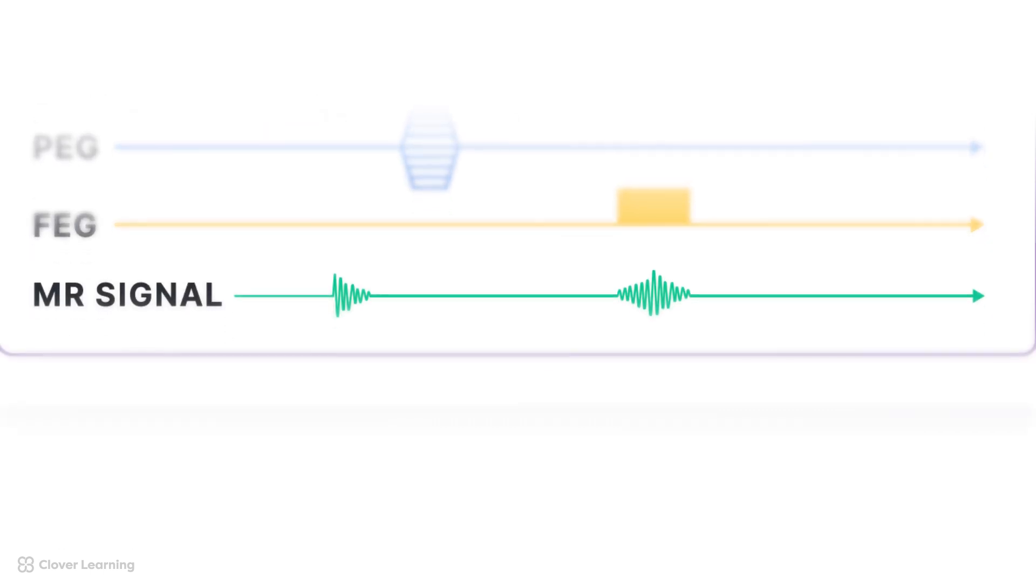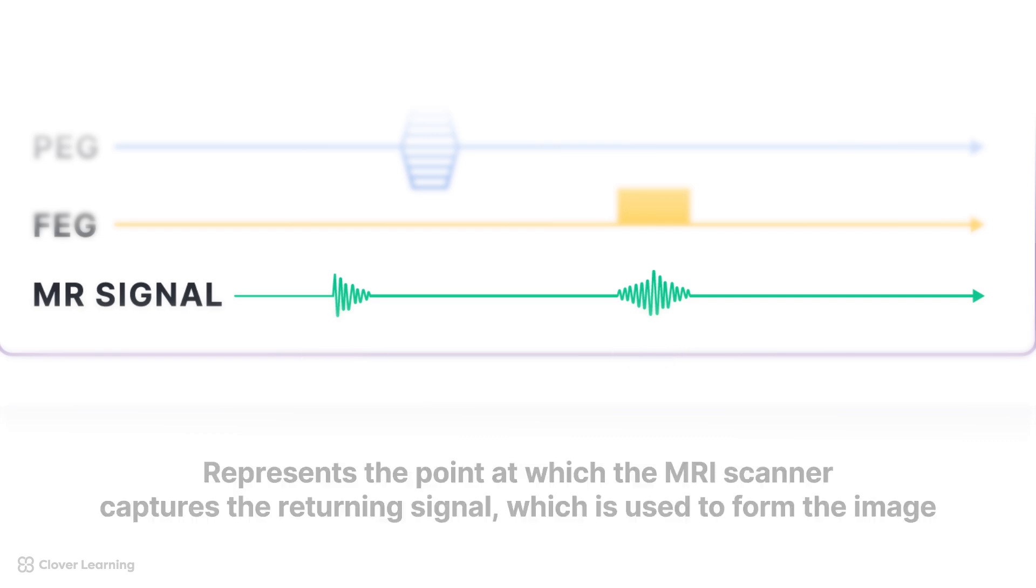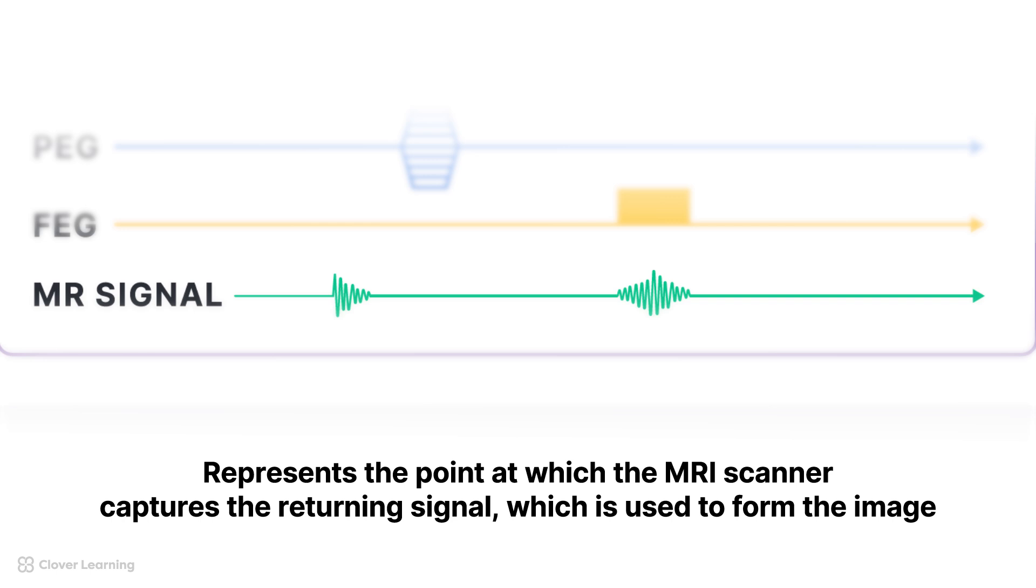The next line depicts the free induction decay, the FID, and the echo, also called the signal. The FID and the echo appear as signal peaks on the diagram, with the FID usually being about half of the echo. The echo signal peak represents the point at which the MRI scanner captures the returning signal, which is used to form the image.